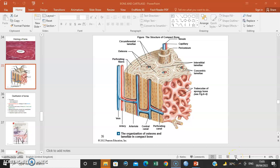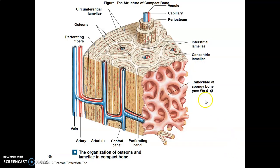Hello everybody, this is Dr. Ominde. We finalize on bone and cartilage. Just a recap: bone has two parts, the inner spongy and the outer compact, which is hard. The outer compact is covered by periosteum on the outside and endosteum on the inner part, separating it from the spongy layer.